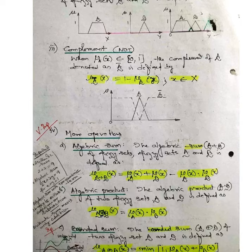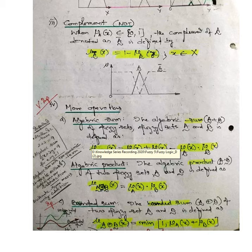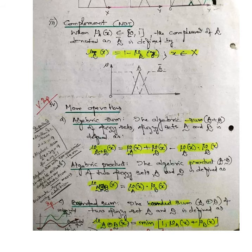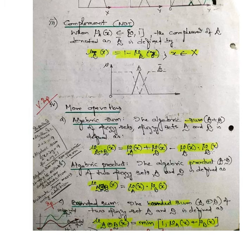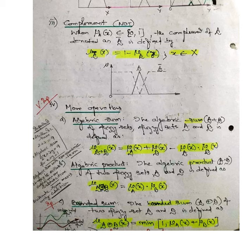Apart from this, there are some very important other operations under the Fuzzy Set — that is the algebraic sum. The algebraic sum of Fuzzy Set A plus Fuzzy Set B is defined as: mu of (A plus B)(x) equals mu_A(x) plus mu_B(x) minus mu_A(x) times mu_B(x). You should remember this particular equation because you will need it when solving problems. Note that algebraic sum is not the same as the union operation.